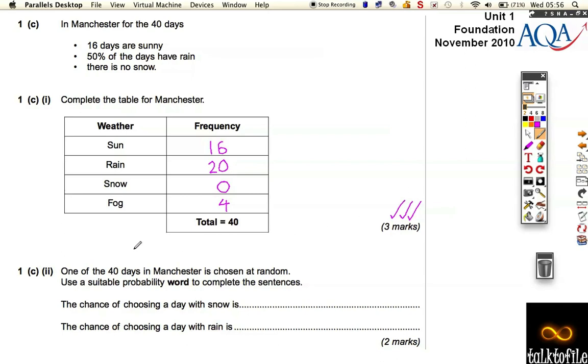And then there's a bit of a probability question. It asks, one of the 40 days in Manchester was chosen at random. Use a suitable probability word to complete the sentences. The chance of choosing a day with snow, so we'll just look in this table. The chance of choosing a day with snow is zero out of 40, so the word we need is impossible. Out of those 40 days, it didn't snow at all, so it must be impossible to pick a snowy day.